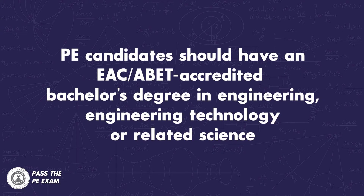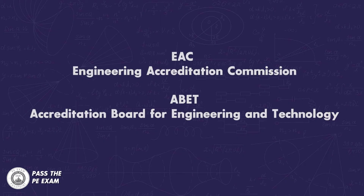Number one: education. Generally, engineering licensing boards require PE candidates to have an EAC/ABET accredited bachelor's degree in engineering, engineering technology, or related science. EAC stands for Engineering Accreditation Commission, and ABET stands for Accreditation Board for Engineering and Technology. The ABET accreditation provides assurance to the states that a college or university program meets the quality standards of the profession — a way to ensure consistency across the country in the concepts and topics being taught to engineering students.